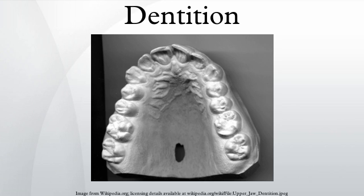The premolars and molars are at the back of the mouth. Depending on the particular mammal and its diet, these two kinds of teeth prepare pieces of food to be swallowed by grinding, shearing, or crushing. The specialized teeth — incisors, canines, premolars, and molars — are found in the same order in every mammal.